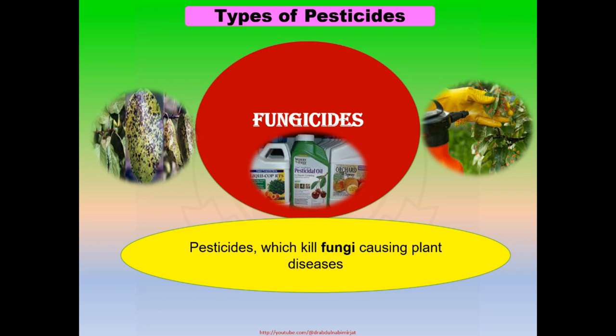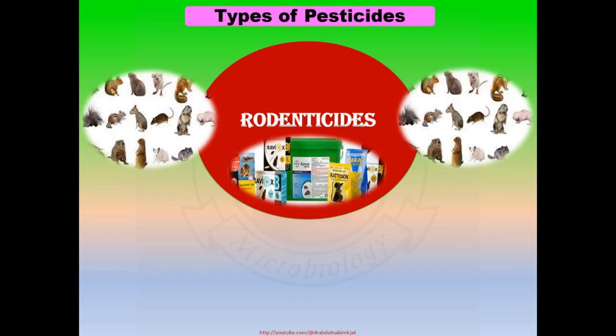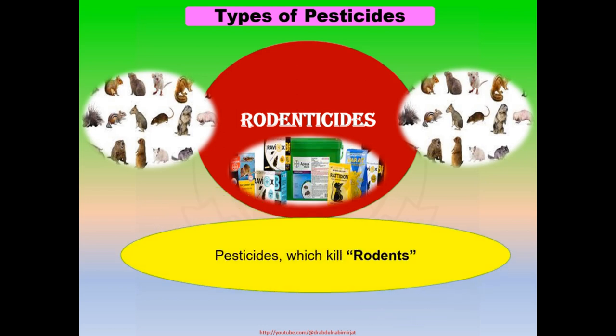Fungicides are the types of pesticides which kill fungi causing plant diseases. Some examples of these fungi include Pythium, Fusarium, and Rhizoctonia species. Rodenticides are also the types of pesticides which kill particularly rodents.